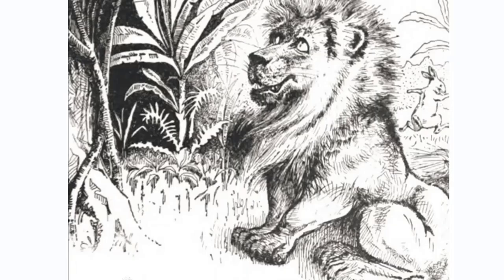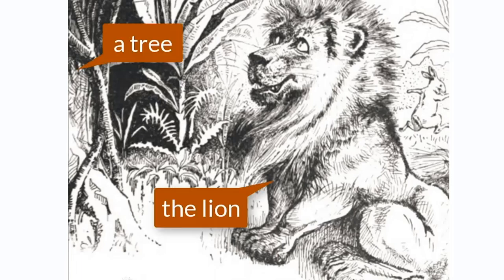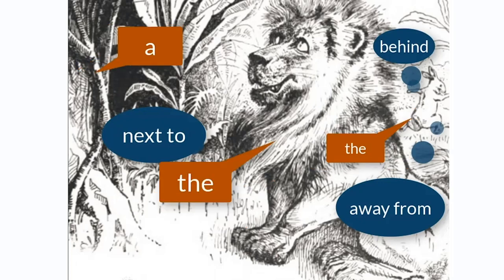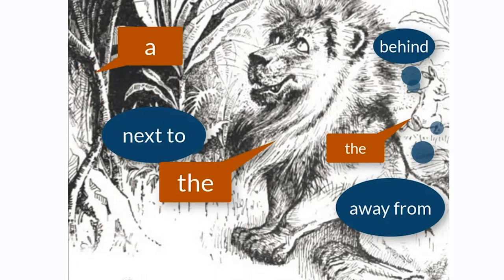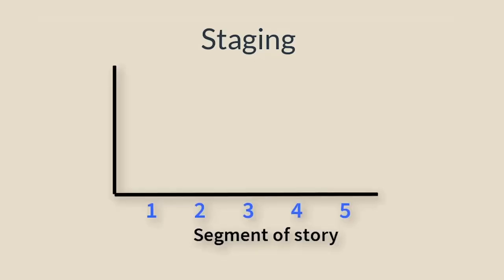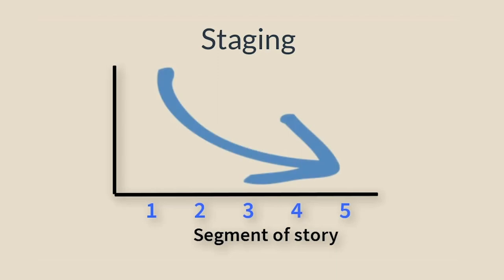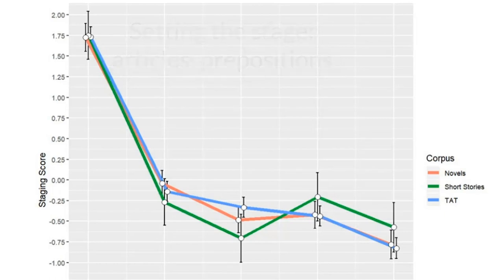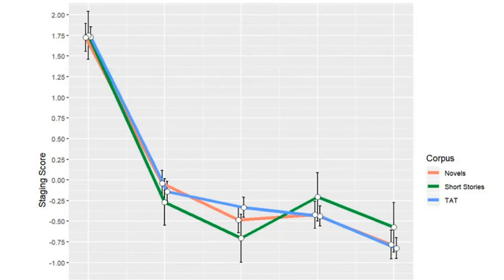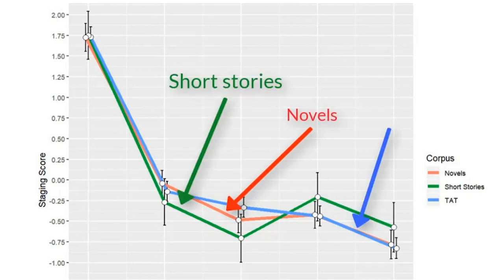Think back to the beginning of The Hare and the Lion. To set the stage, articles and prepositions are needed to provide information about people, places, and things. We expected that articles and prepositions would be used at the highest rates at the beginning of stories, and would drop as the story unfolded. Our results found just this, and this narrative trend holds across novels, short stories, and amateur stories.